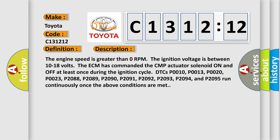Once the ECM has commanded the CMP actuator solenoid on and off at least once during the ignition cycle, DTCs P0010, P0013, P0020, P0023, P2088, P2089,